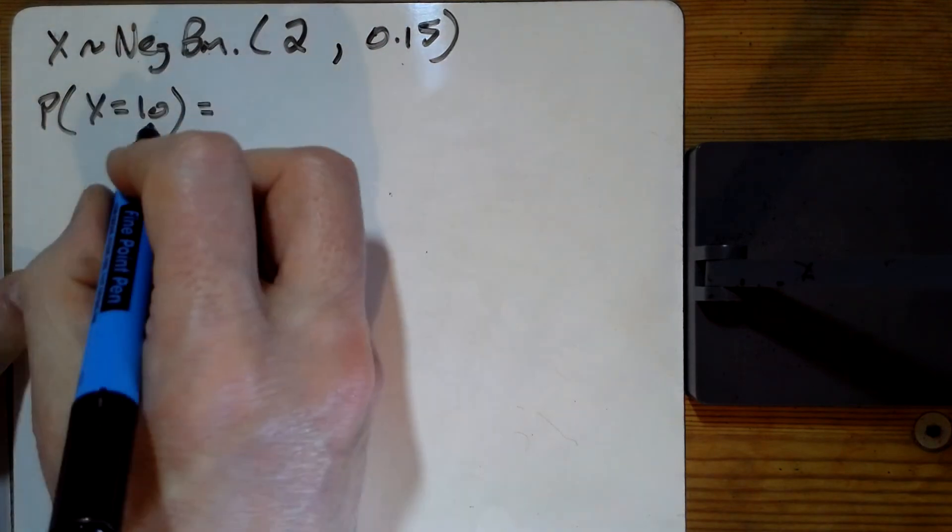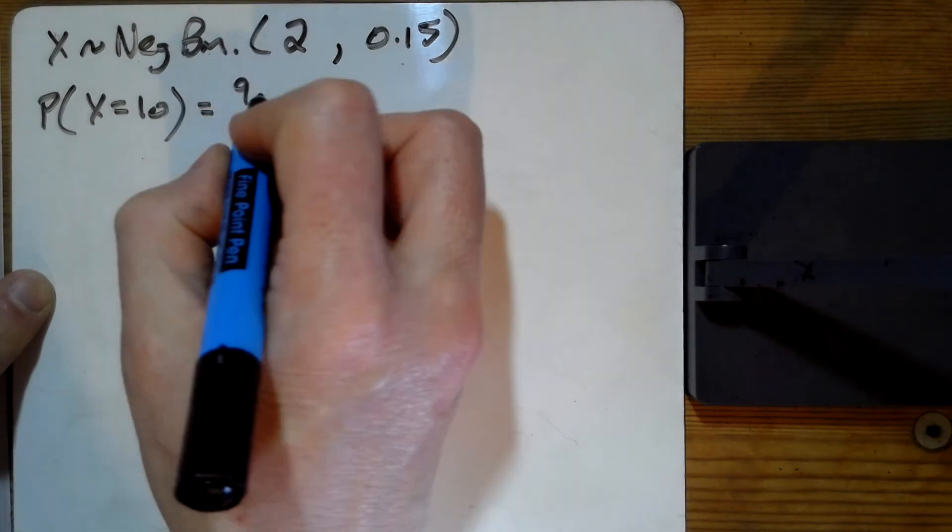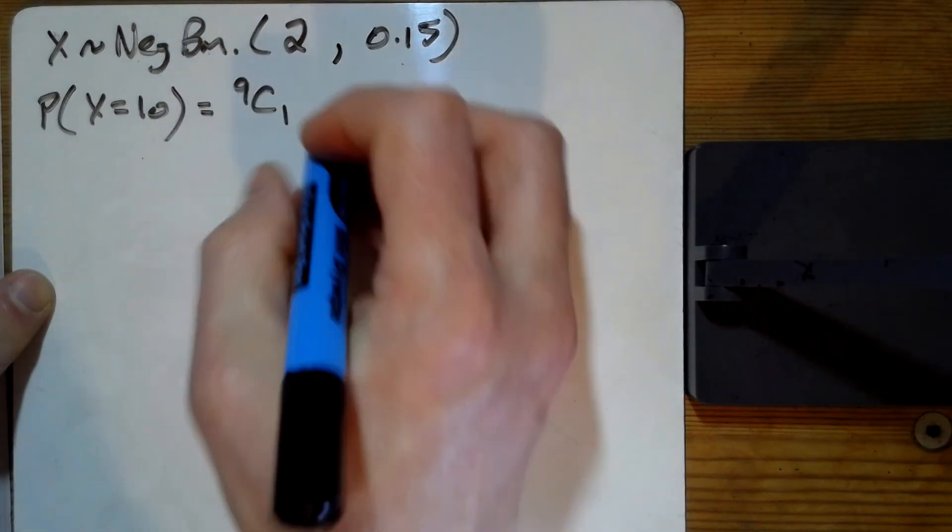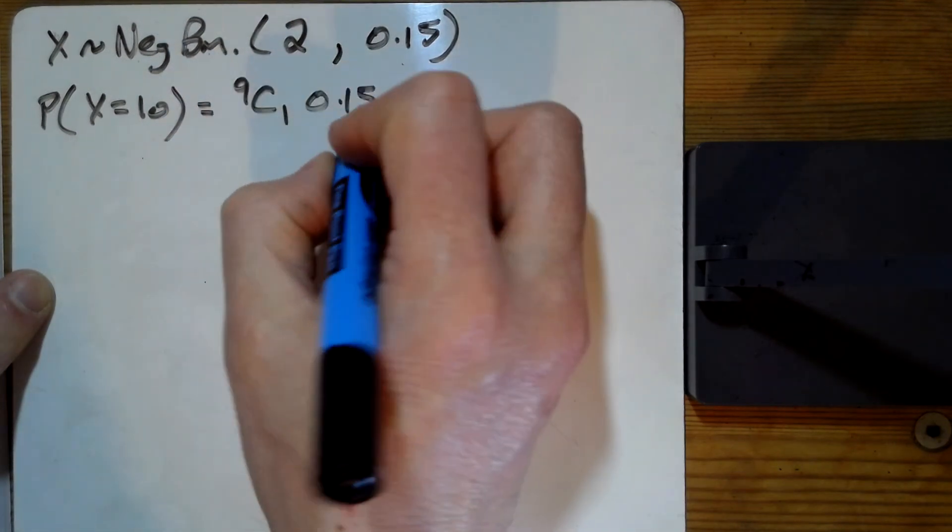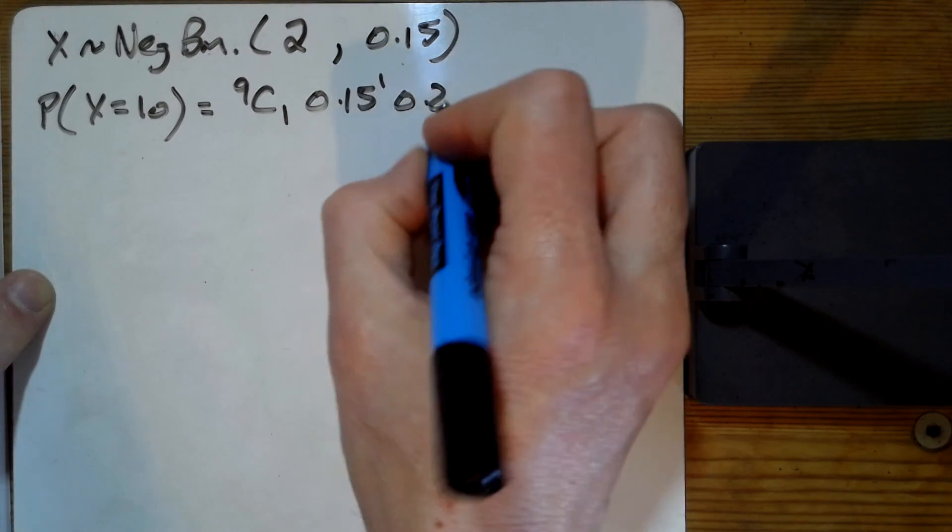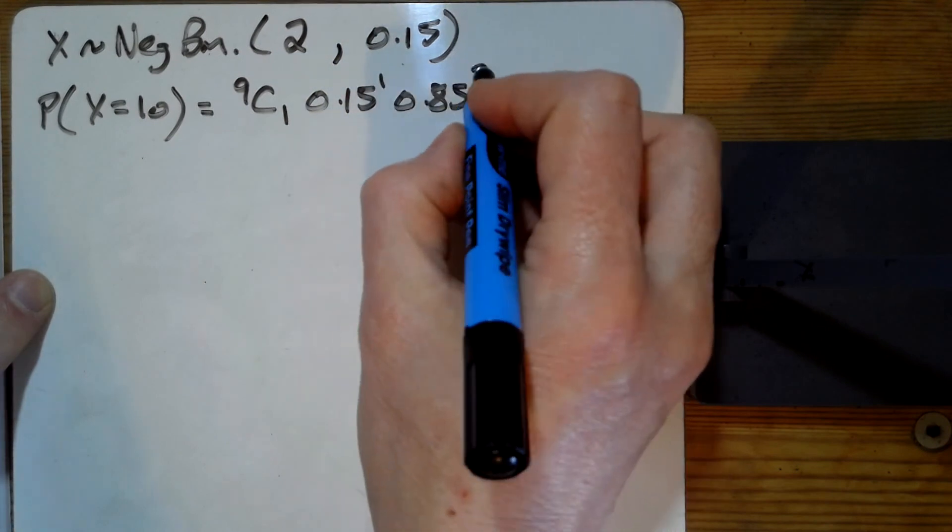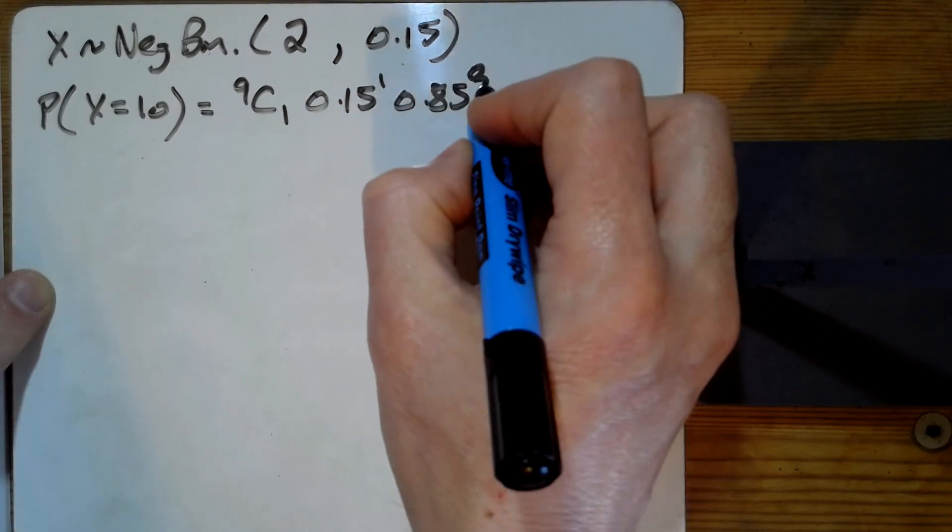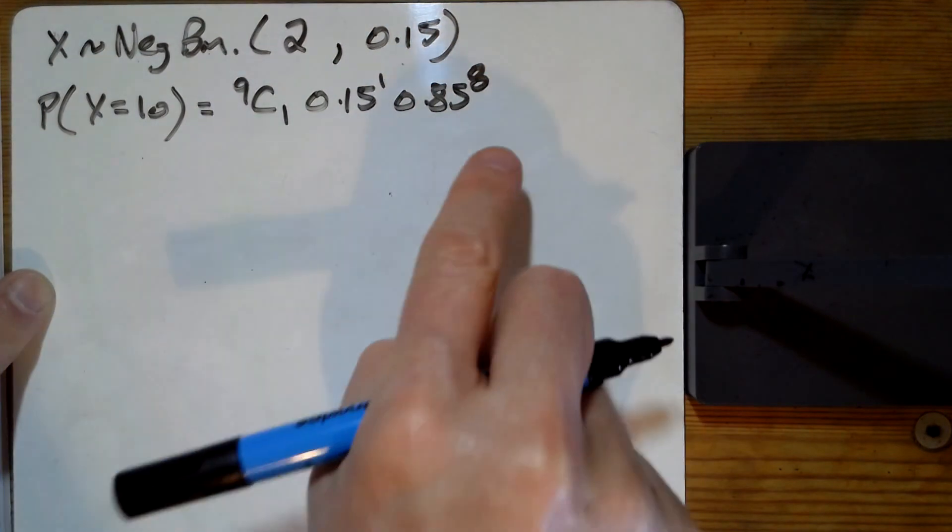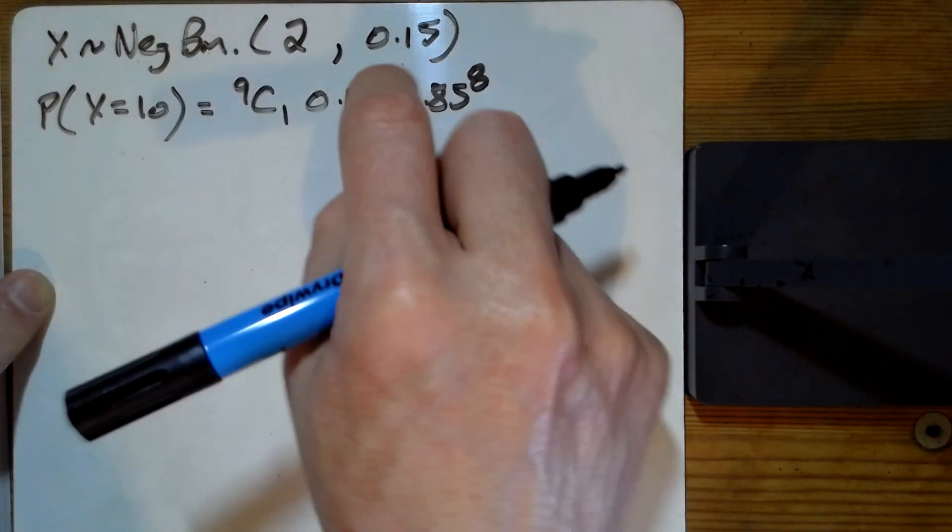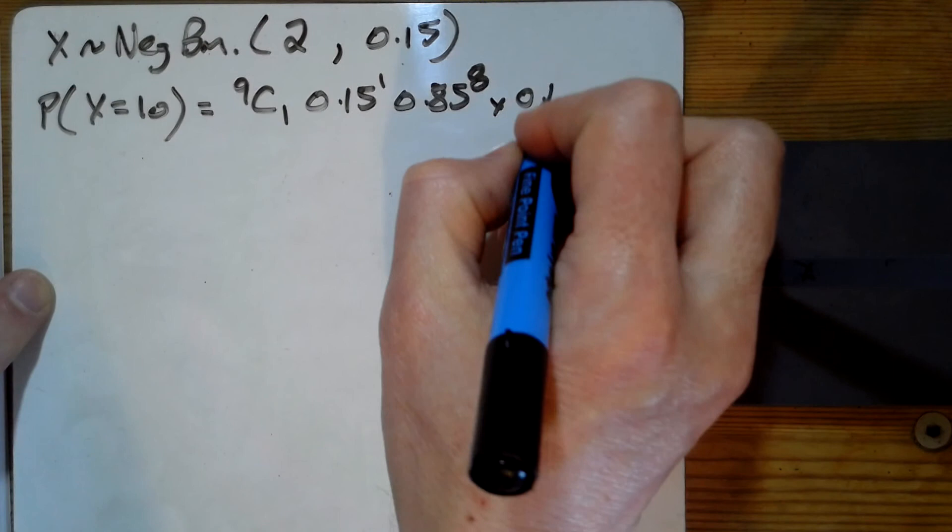So the way we do this, we're going to go thinking about the first nine of them. So in the first nine of them, we want him just to hit it once and miss the other eight times. And then on the 10th go, we want him to hit it. So we then just times by another 0.15.